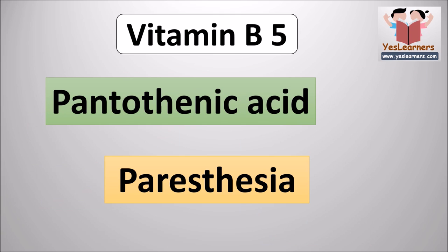The scientific name of vitamin B5 is pantothenic acid. Vitamin B5 plays a specific role in the synthesis of steroids. The disease caused due to the deficiency of vitamin B5 is paresthesia.